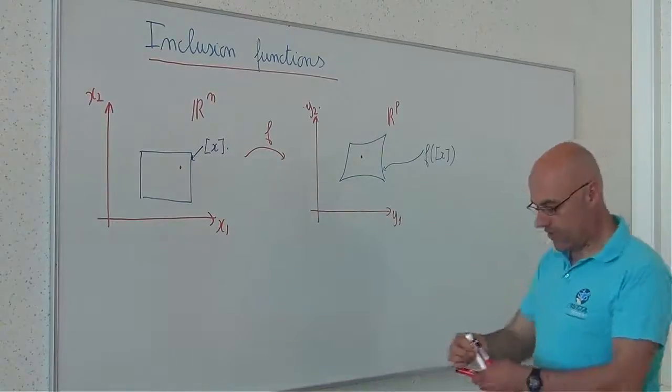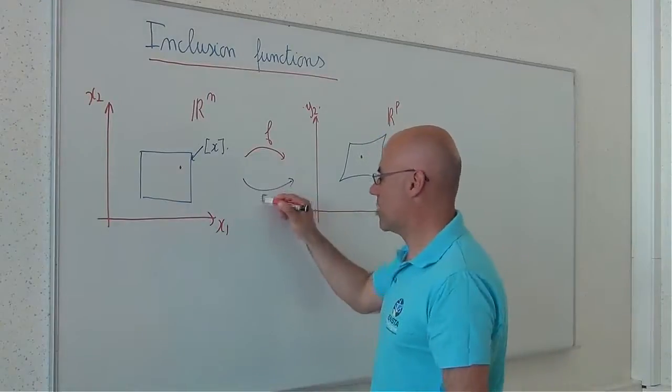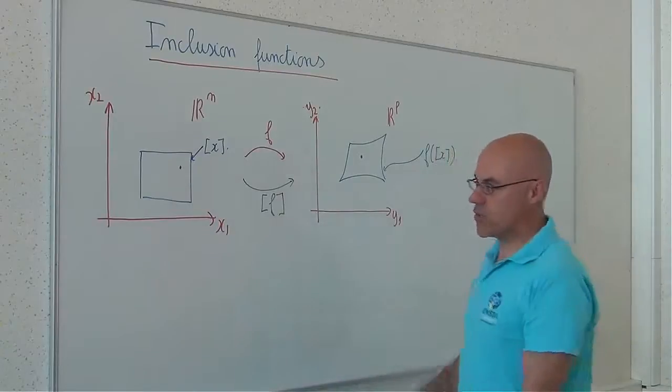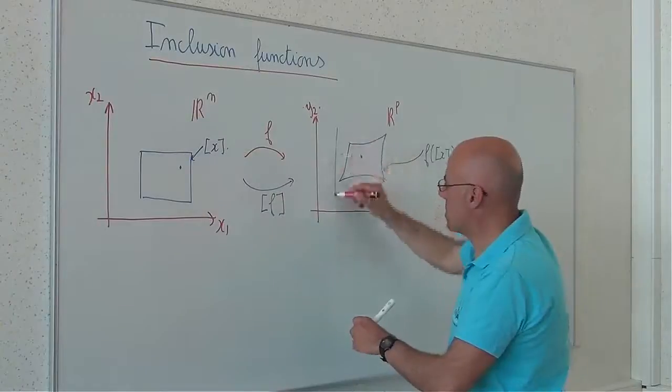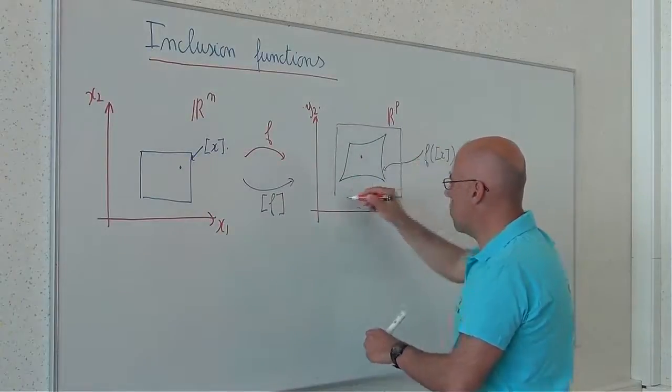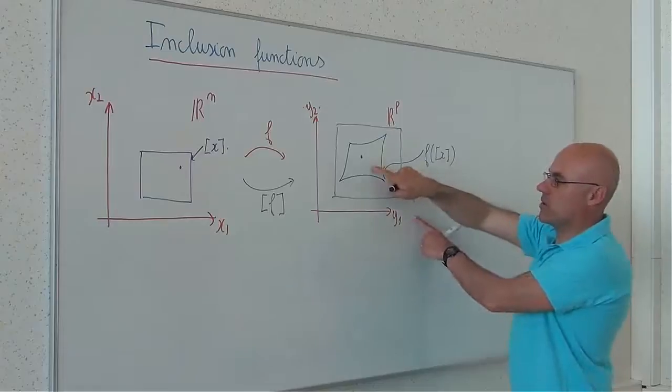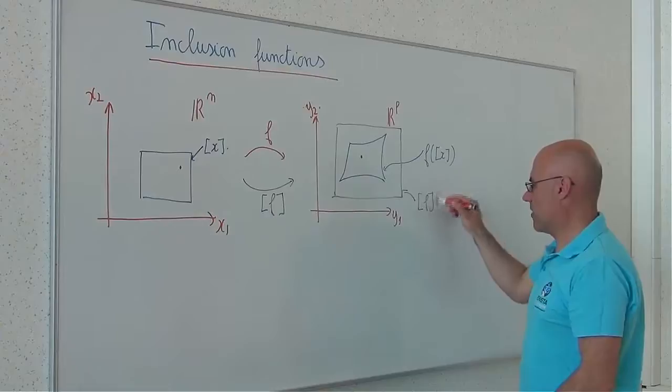What is an inclusion function? An inclusion function, which should be written as [f] (square f), is a function which associates one box, a box which encloses all feasible values, which includes this set, f of x.